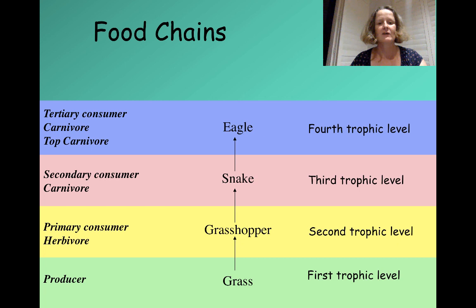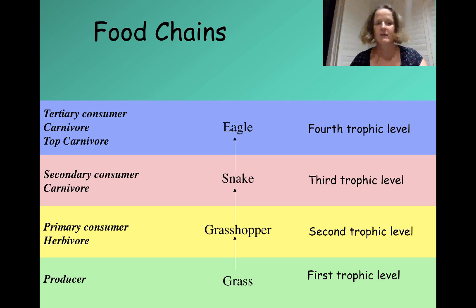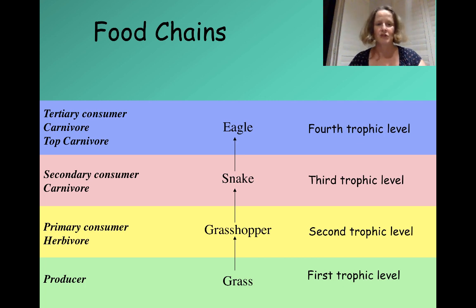Up at the top, the eagle is also a carnivore — it is eating animal matter. It happens to be at the end of this particular food chain, so it is a top carnivore. It's the third consumer of the organic molecules, so it is a tertiary consumer at the fourth trophic level, the fourth feeding level in our food chain.